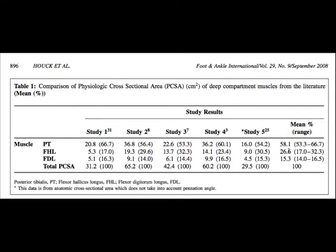Across all the different muscles, these are the averages over here to the right. If we think about all of the muscles together as representing 100% of the potential for inverters to act, these are the relative percentages attributable to each muscle. The posterior tibialis makes up over 60% of the PCSA, the FHL is about 27%, and the FDL is even smaller. Essentially, the posterior tibialis muscle is larger than both of the other two put together.